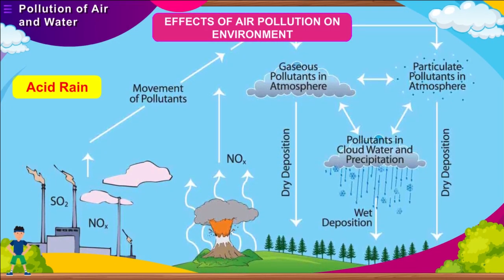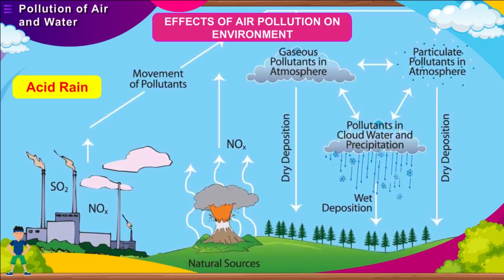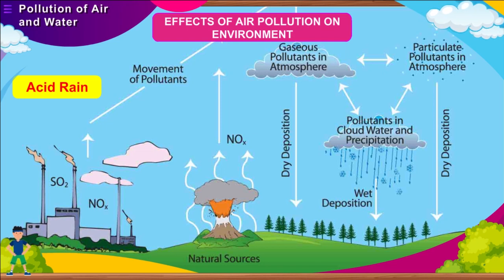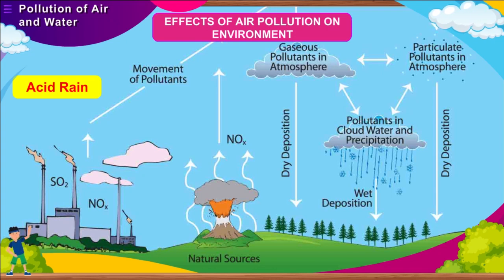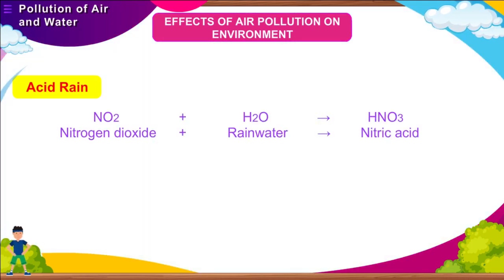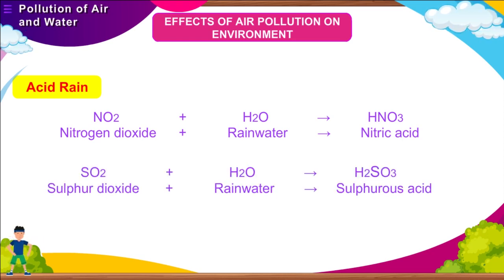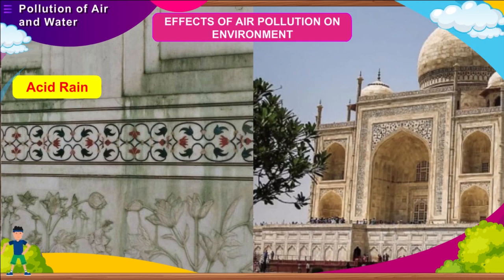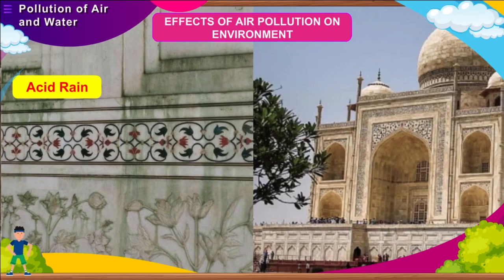Acid rain. Nitrogen dioxide released from automobiles and sulphur dioxide released by the burning of fossil fuels mix with falling rainwater and result in the formation of nitric acid and sulphurous and sulphuric acid, causing acid rain. This acid rain contaminates the soil and water bodies. Nitrogen dioxide + rainwater = nitric acid. Sulphur dioxide + rainwater = sulphurous acid. Acid rain causes considerable harm to buildings. The famous Taj Mahal is losing its colour and sheen due to acid rain caused by increasing air pollution in and around Agra.